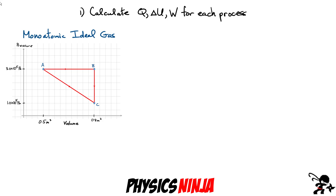It's a monoatomic ideal gas, but I haven't told you how many moles of gas. We start at point A and go from A to B. I'll start with the work. This is a constant pressure process — the pressure is always 3×10⁵ pascals.